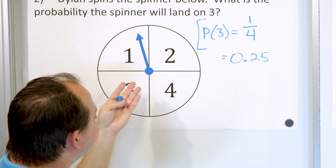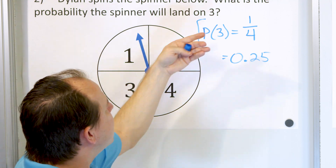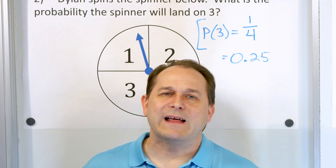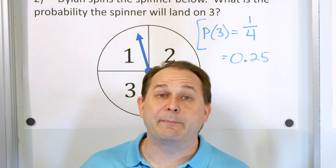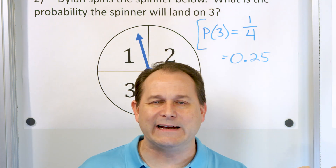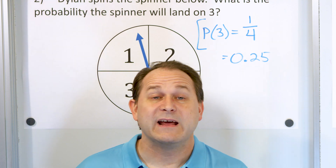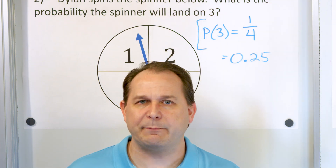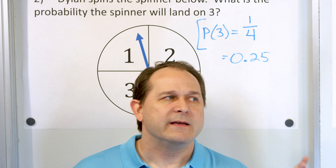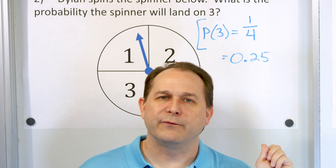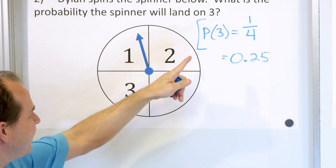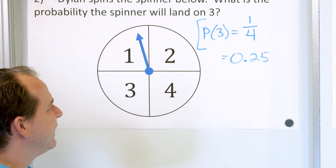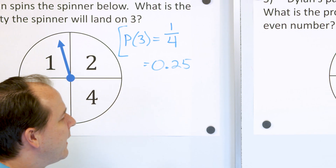Will it be exactly 25? No, it'd be a little bit less or a little bit more. But if I ran this experiment a thousand or a million times, the 25% probability of landing on the number three would be closer and closer to what I predict.